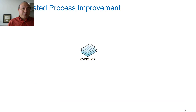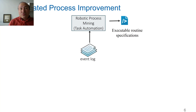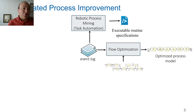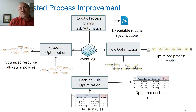In a nutshell, automated process improvement takes execution data from a business process and allows four different things: first, identifying opportunities for automating or otherwise streamlining the execution of tasks; second, opportunities for optimizing the order in which tasks are performed; third, opportunities for optimizing the decision logic used in the business process to maximize certain outcomes; and fourth, opportunities for optimizing the way resources are allocated to tasks in the business process.